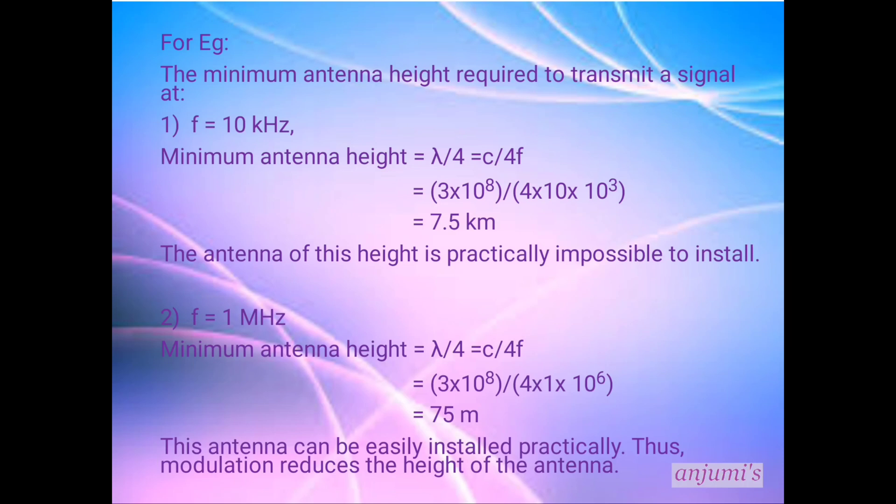Next, to find minimum antenna height we consider f = 1 MHz. Minimum antenna height = λ/4 = c/4f. We can substitute the values: 3×10⁸ divided by 4×1×10⁶. When we solve it, we get the answer as 75 meters.